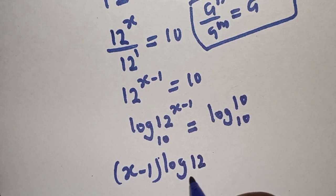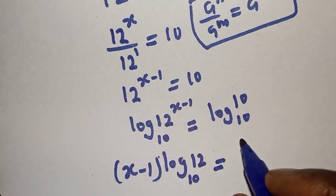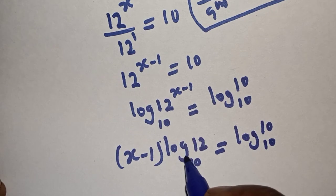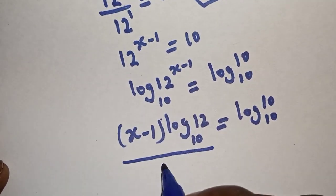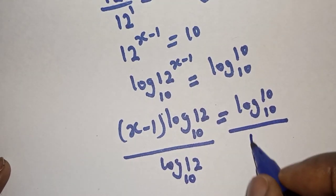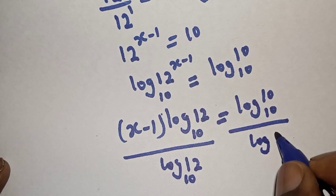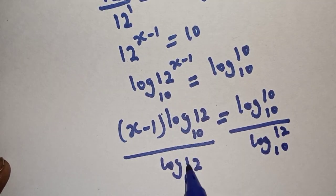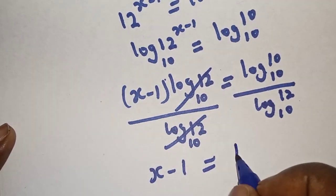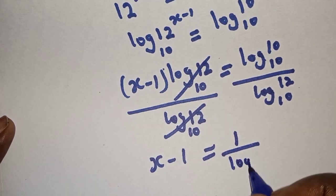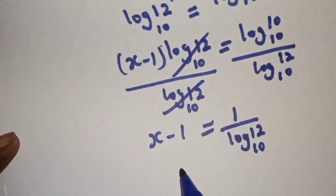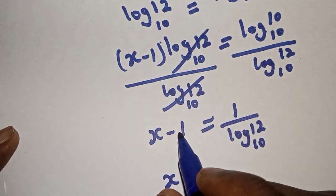Applying the log power rule: (s minus 1) times log 12 base 10 is equal to log 10 base 10. Now let's divide both sides by log 12 base 10 — this cancels — so s minus 1 is equal to log 10 base 10, which is 1, over log 12 base 10.